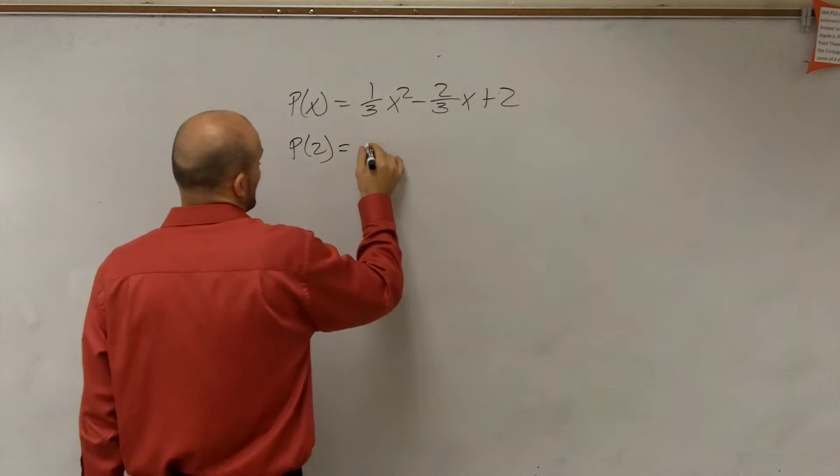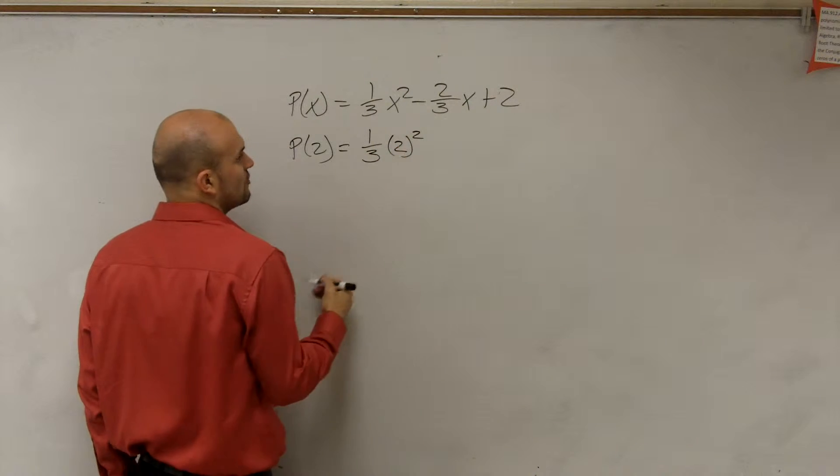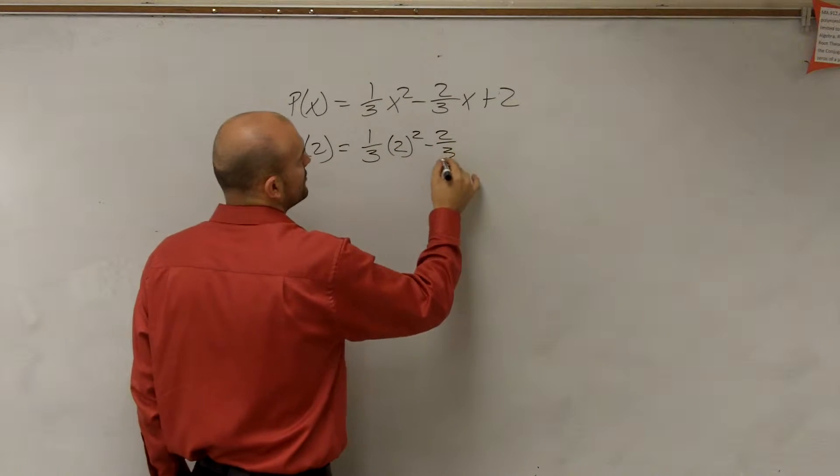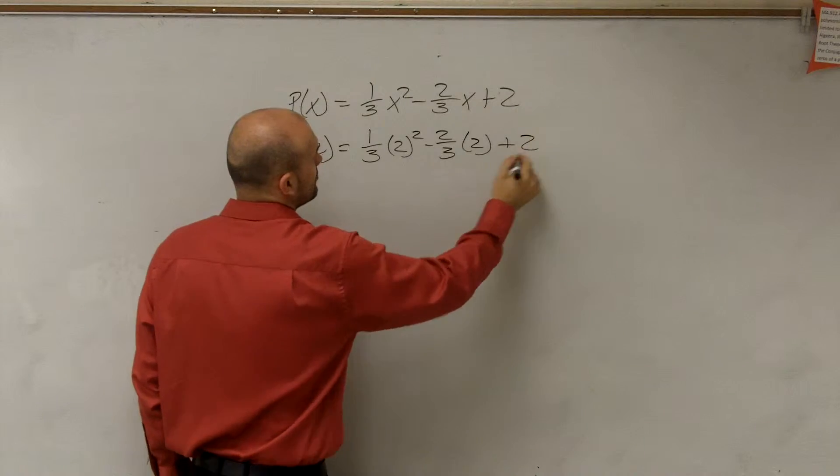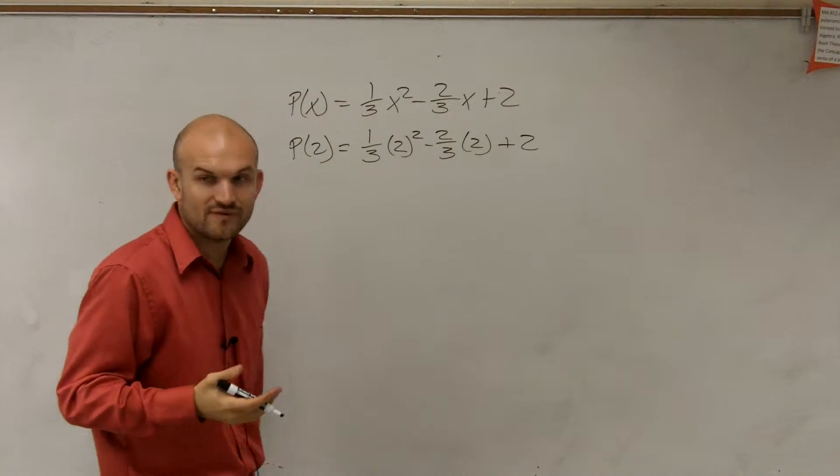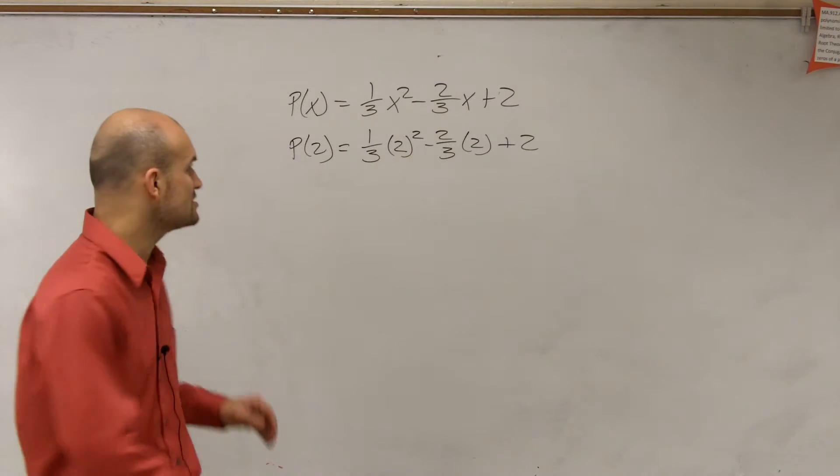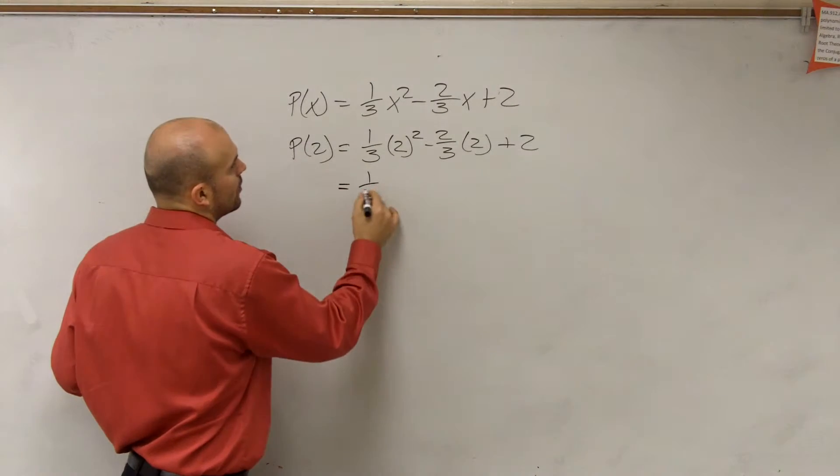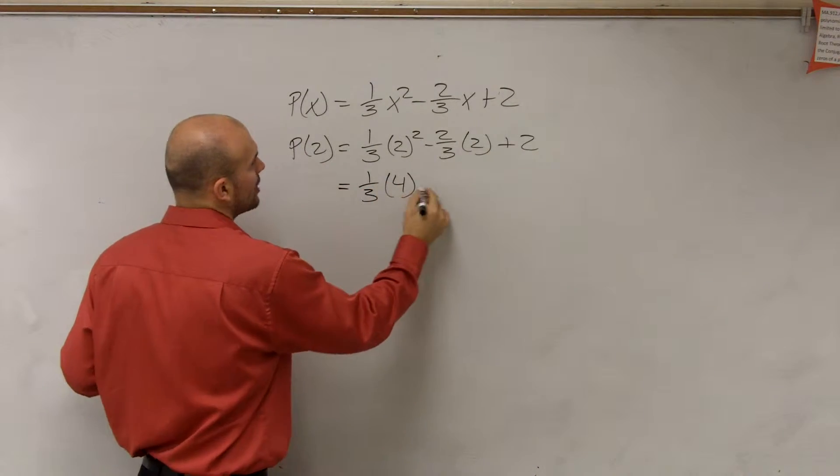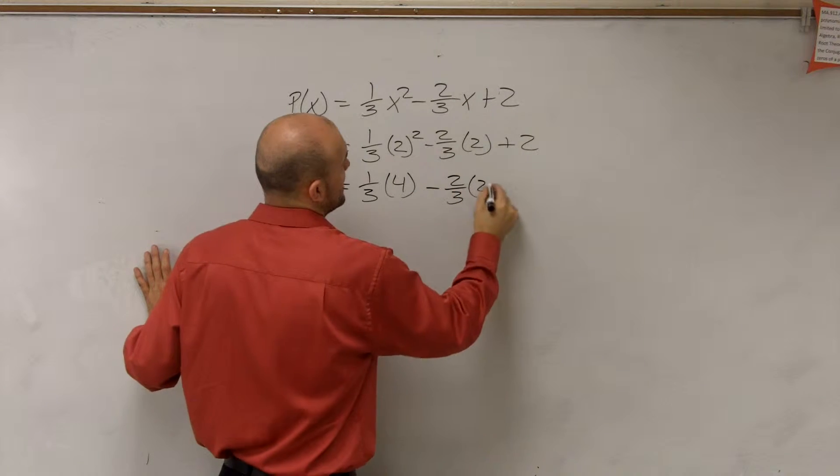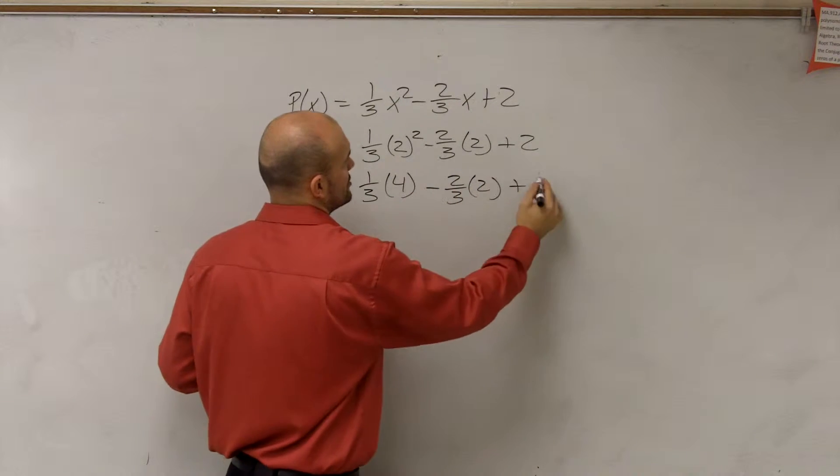So therefore, I have 1/3 times 2 squared minus 2/3 times 2 plus 2. Again, follow the order of operations. You do your powers or your exponents first. So therefore, I'm going to have 1/3 times 4 minus 2/3 times 2 plus 2.